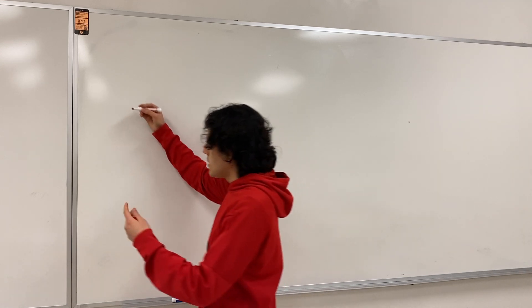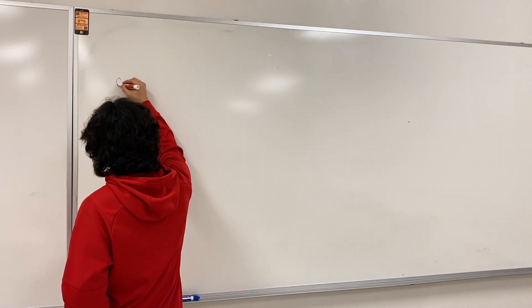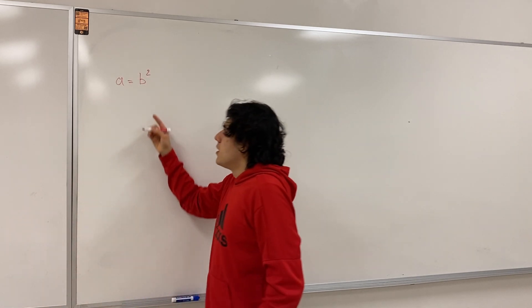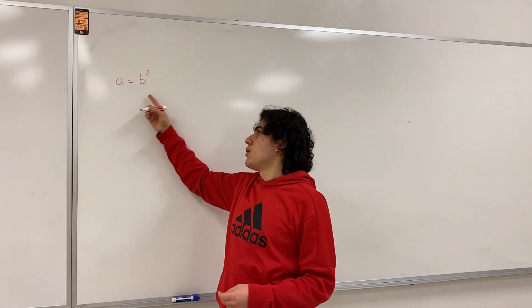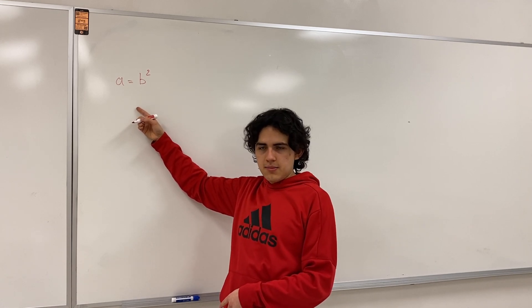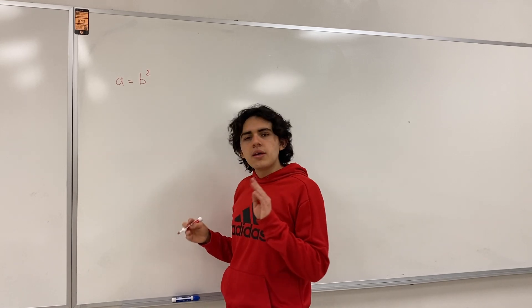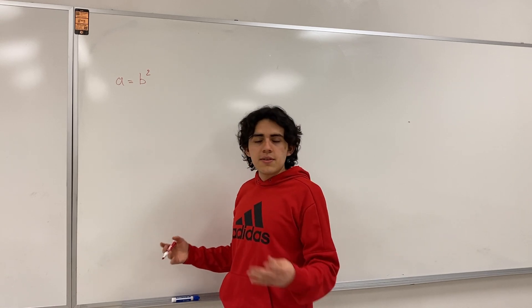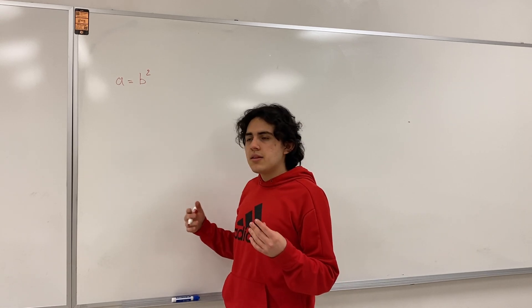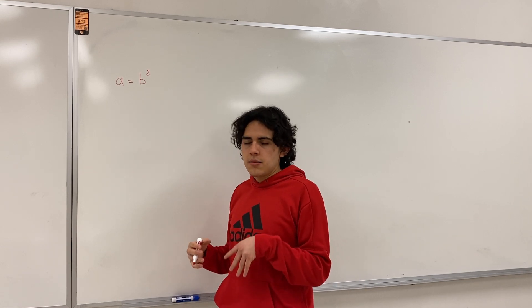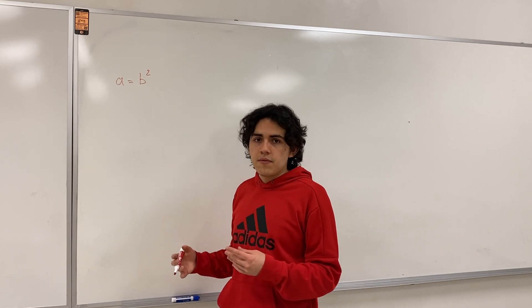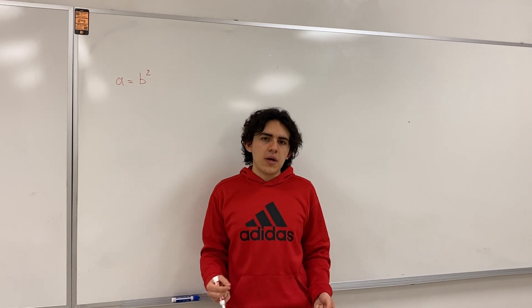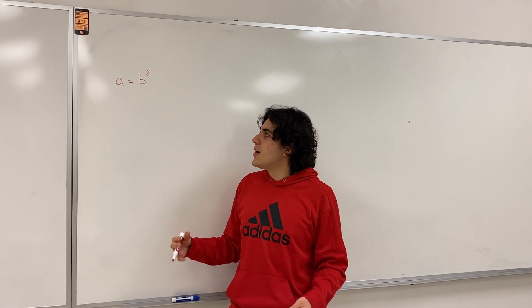For instance, let's say we have a quantity — I'll call it a — and a is equal to b squared. If I don't give you any information, you don't know what the independent or dependent variable is. When you take a derivative and have dy/dx, we often think of y as the dependent variable and x as the independent variable, and that notion is fine for most cases.